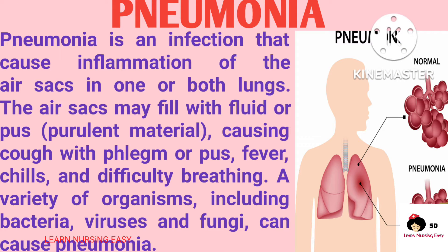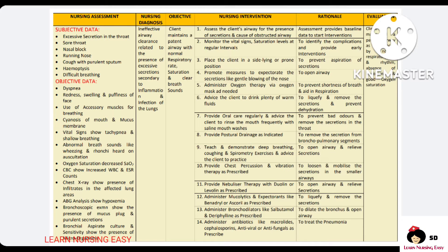Pneumonia is a condition where there is infection and inflammation of the lungs, which can be caused due to an invasion of microorganisms or any aspiration of gastric contents that can cause injury and inflammation to the lungs. When a patient is having inflammation of the respiratory tract, there will be increased production of poor lung sputum which can block the airway. So I made a diagnosis: ineffective airway clearance related to the presence of excessive secretion secondary to inflammation and infection of the lungs.